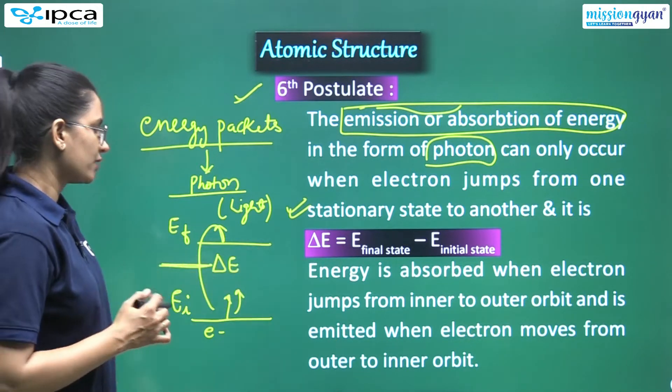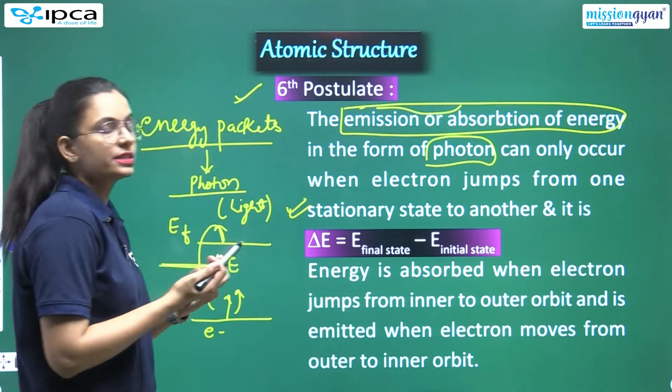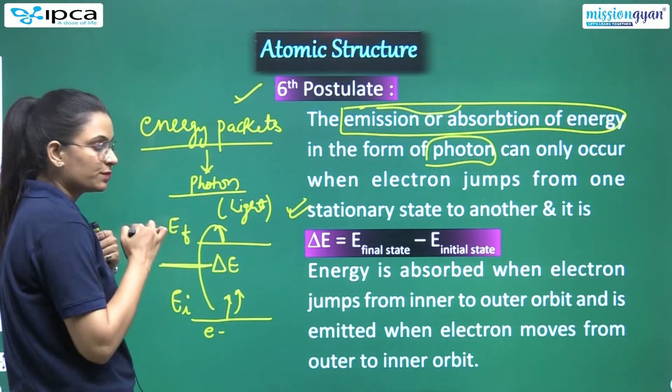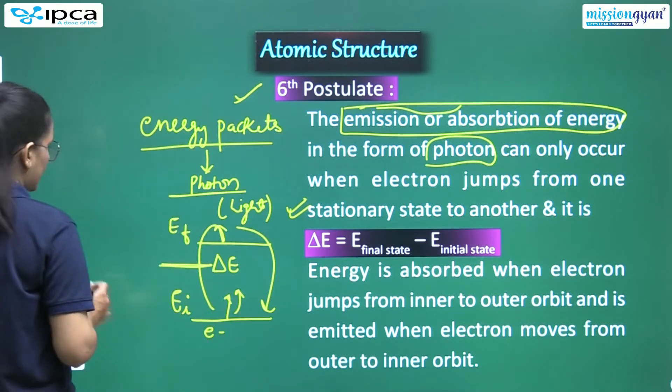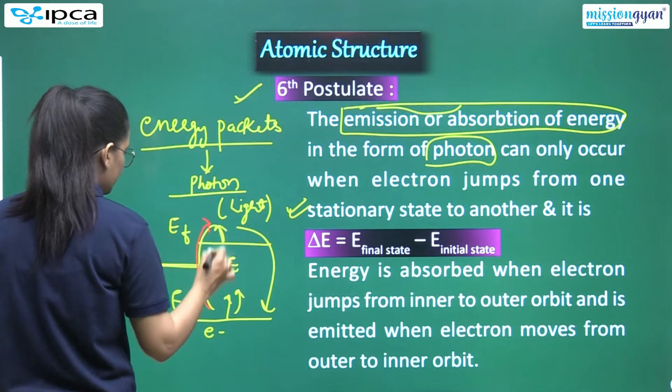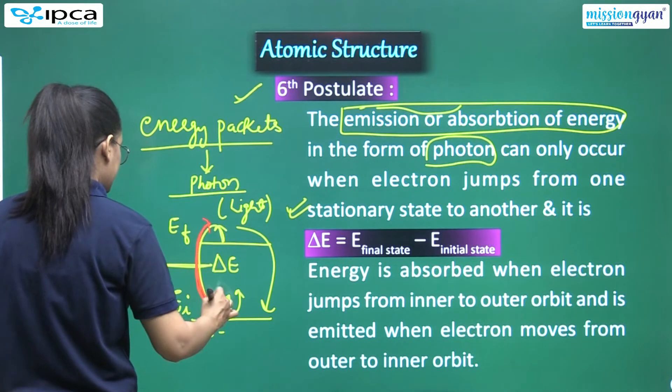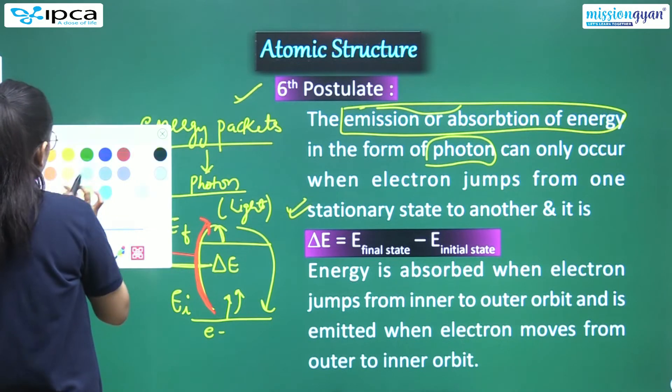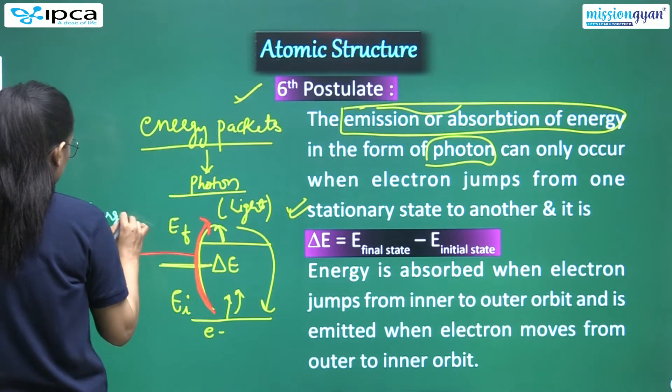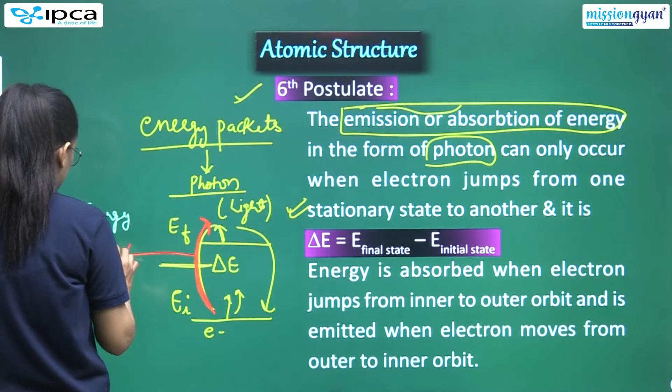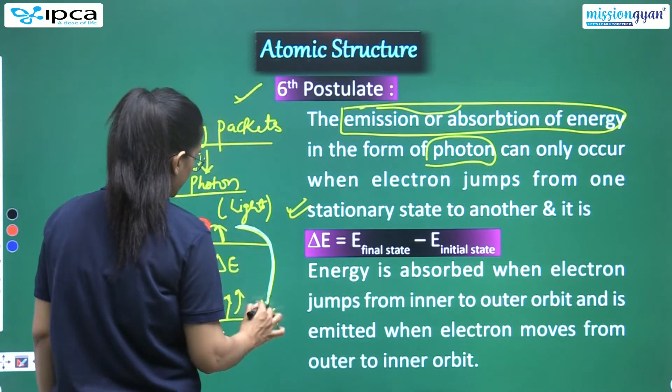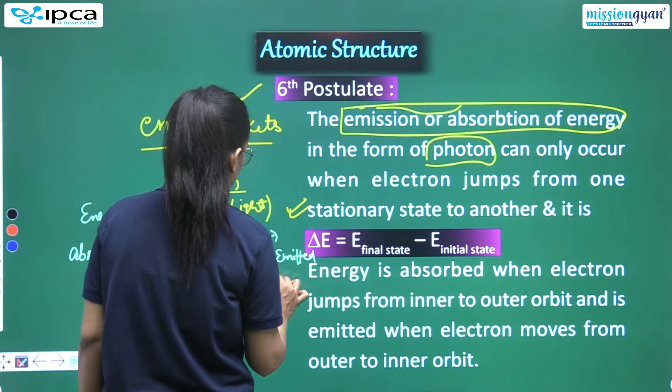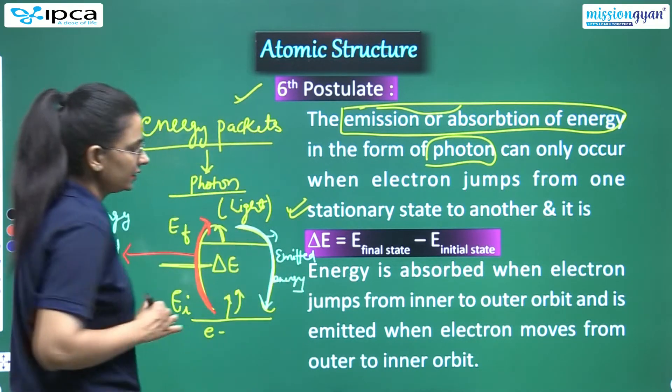Suppose there is an electron here at level 2, but it jumped to this level. So for this, here this is its initial state and here this is its final state, and this is called delta E. So energy is absorbed when electron jumps from inner state to outer state - energy will be absorbed there. And it is emitted when electron moves from outer to inner. When it goes from here to here, energy will be absorbed. When it goes from here to here, it will be emitted.